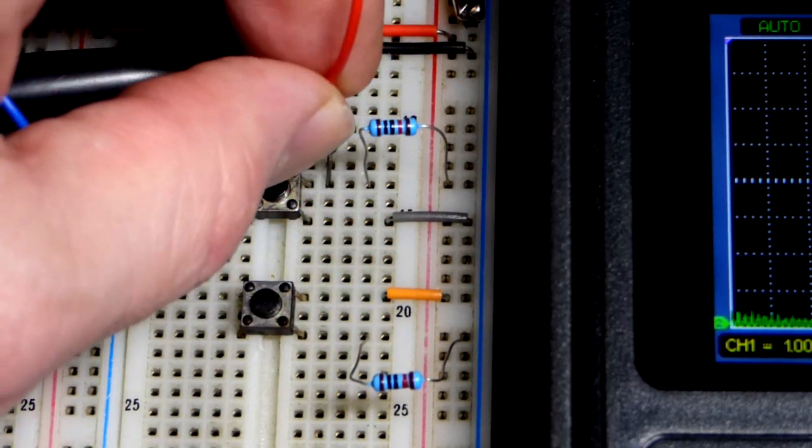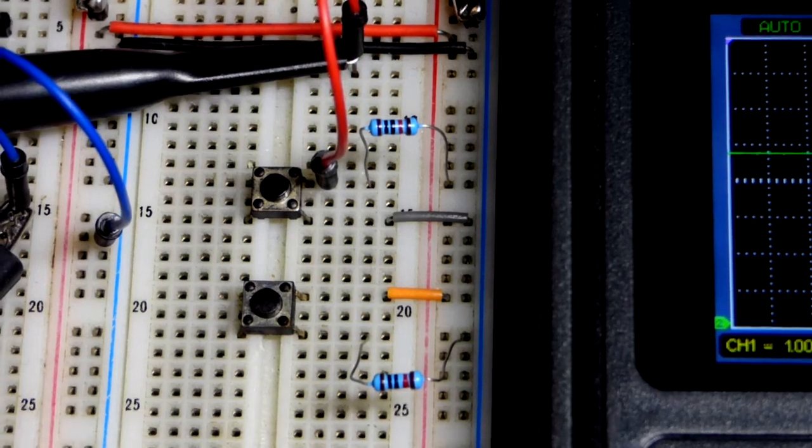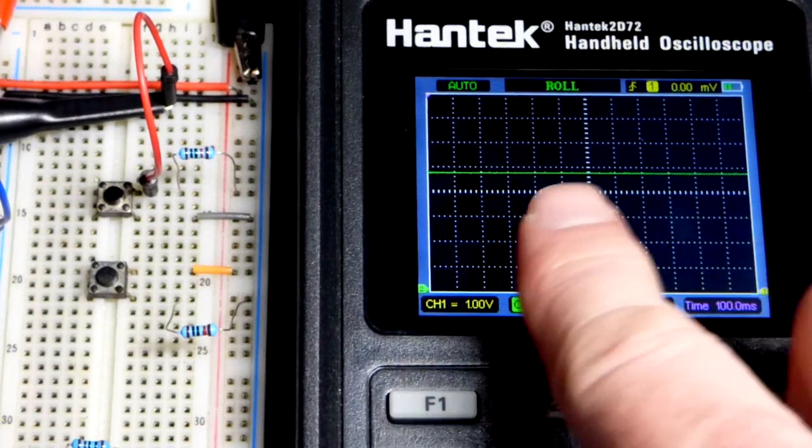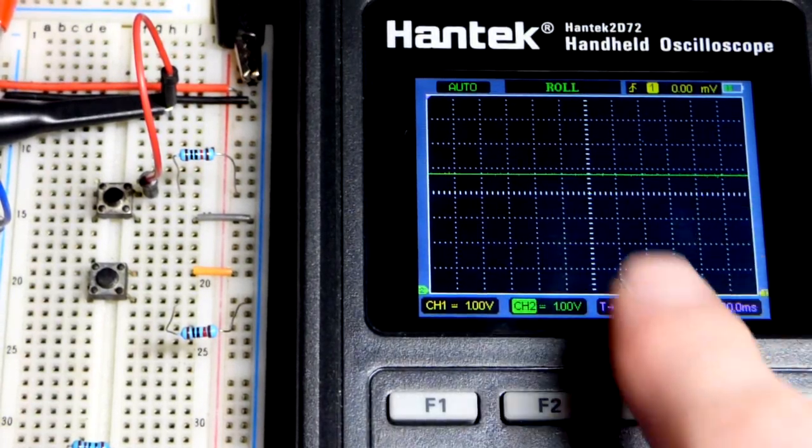We're going to take our measurements where the resistor and the switch meet. So there you can see we've got the pull-up resistor. We have 5 volts at the output because that's what I have at the power supply.